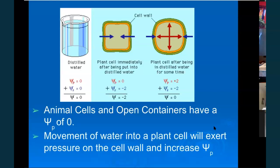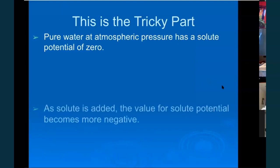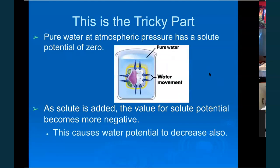Pure water has a solute potential of zero because it has no solutes, so it has a very high tendency to move, and water will move into most cells. As solutes are added, the solute potential becomes more negative, and that causes water potential to decrease also. This is tricky because you're talking in negative numbers — comparing negative two and negative four, the greater water potential is negative two.